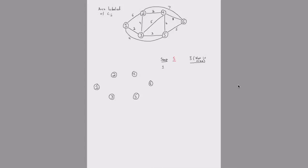To get Prim's algorithm going, we can choose any node as our root node — we're going to choose node 1. In the bottom left, we'll visualize which nodes are in the MST already and which arcs are in the cut from S to S-bar.